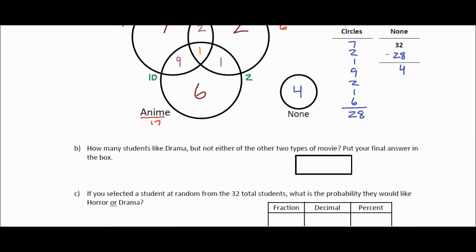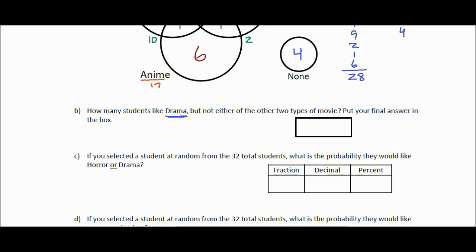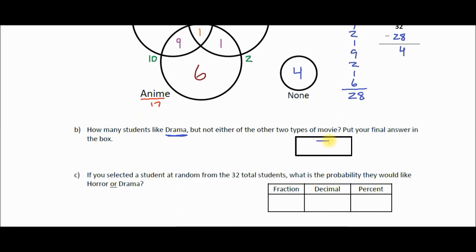Let's do our probabilities. The first question is not actually a probability question: how many students like drama but not either of the other two types of movies? Looking at the circles, the seven in the drama-only section is the only number representing students who like only drama. So the answer is seven.